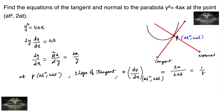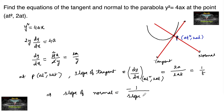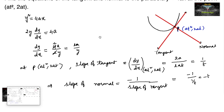So the slope of the tangent is 1/t. This implies the slope of the normal at the same point P is minus 1 divided by the slope of the tangent, since they are perpendicular. So slope of normal = −1 / (1/t) = −t. We now have both slopes, so let's find the equations.